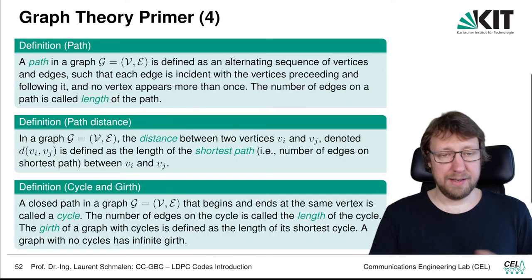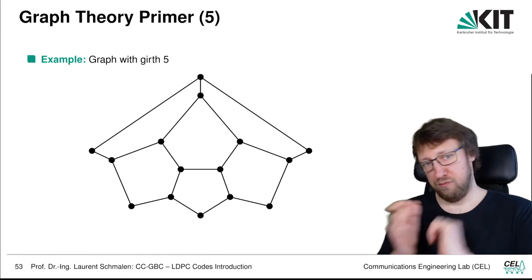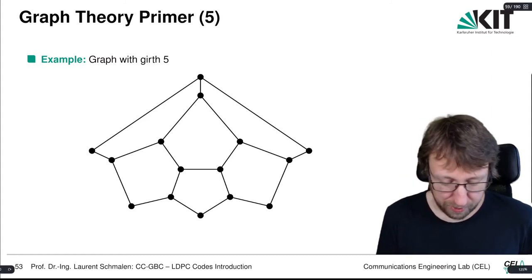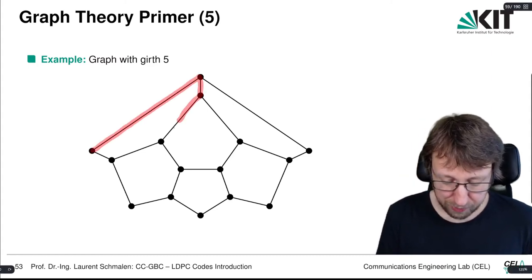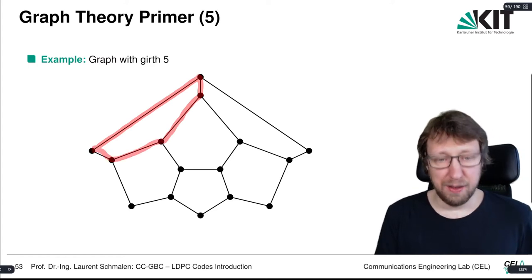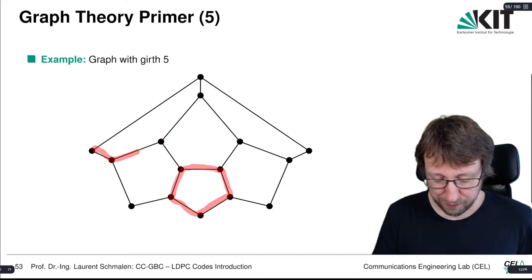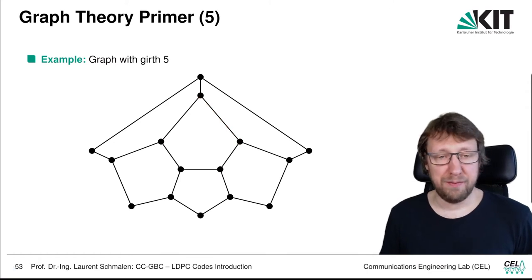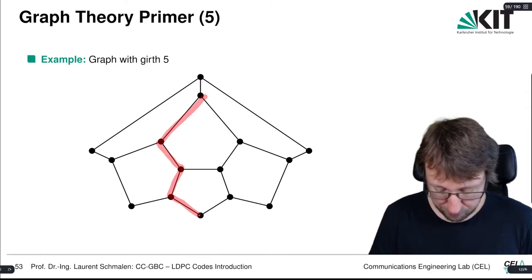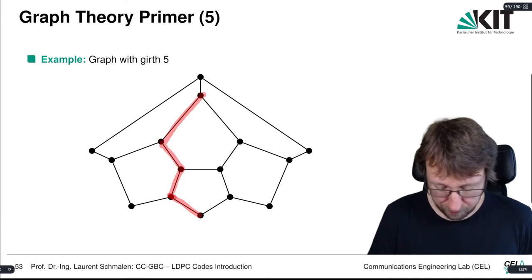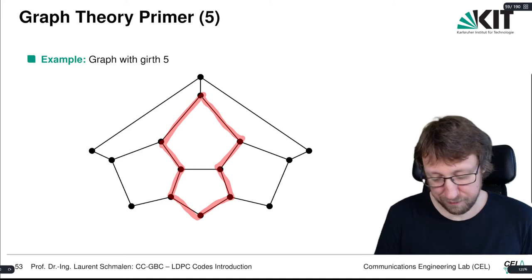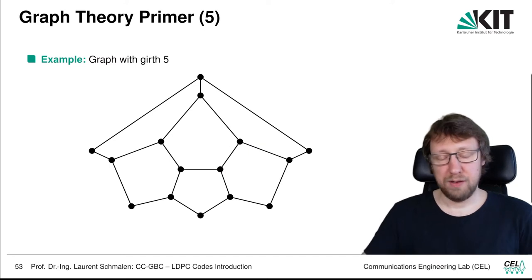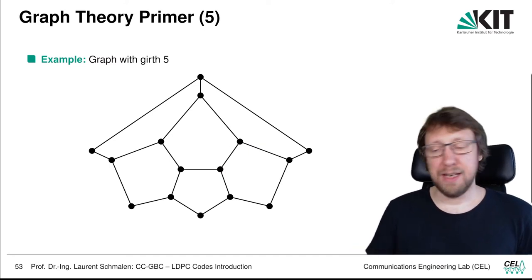Here is a nice graph with a girth of 5. The length of the shortest cycle is 5; you can find several cycles of length 5. You can also find longer cycles — for instance one of length 8 — but you cannot find a cycle shorter than 5. Therefore the girth of this graph is 5.